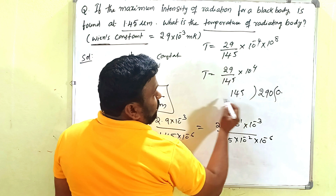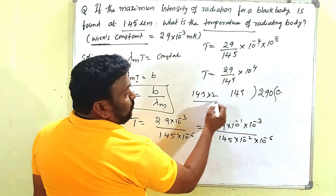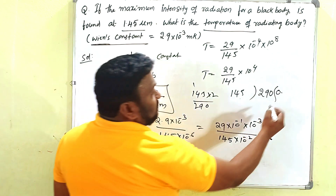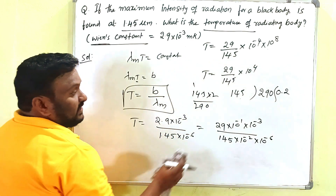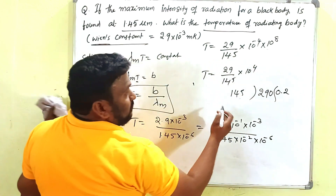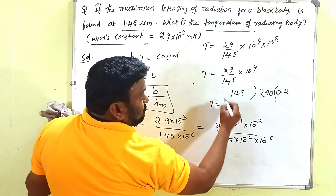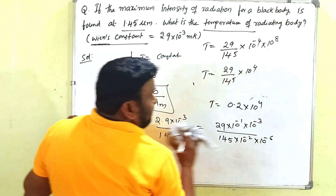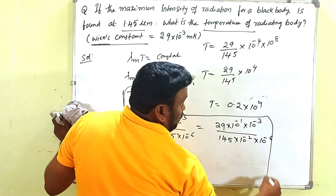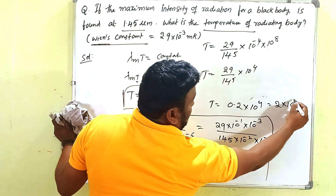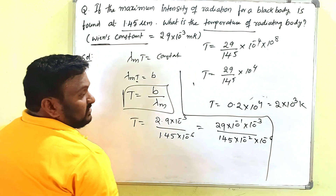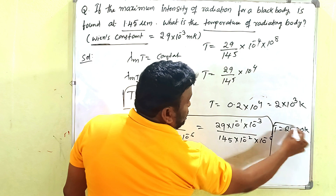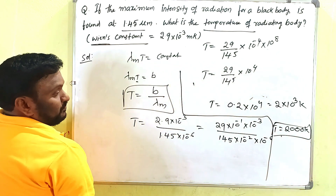Now 29 / 145 = 0.2, since 145 × 2 = 290. So T = 0.2 × 10⁴ = 2 × 10³ Kelvin, which equals 2000 Kelvin. This is the temperature of the radiating black body.